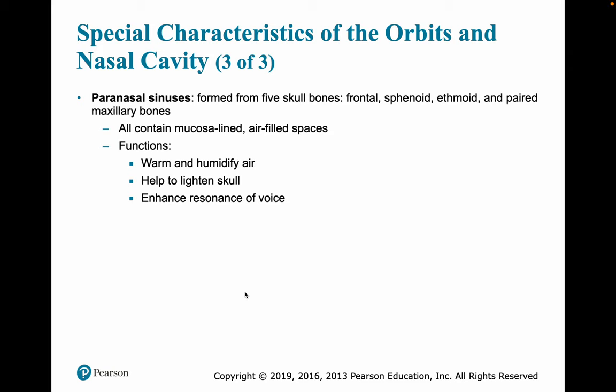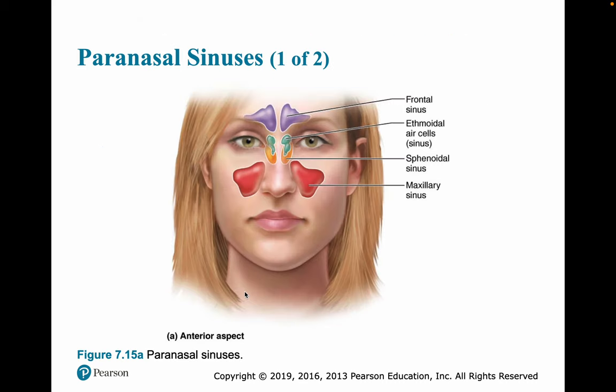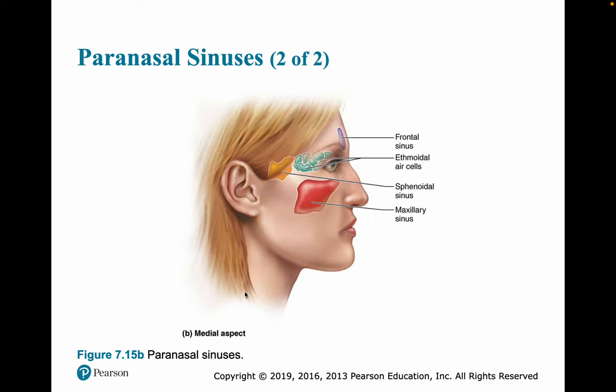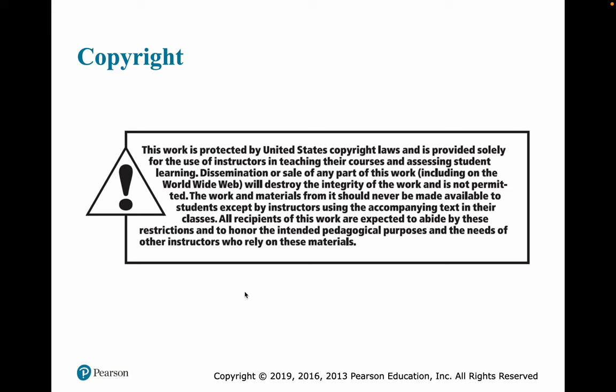Paranasal sinuses are formed from five skull bones: the frontal, the sphenoid, the ethmoid, and the paired maxillary bones. They are mucus-lined, air-filled spaces that function to warm and humidify air, make the skull lighter than if it were solid bone, and enhance the resonance of our voice. They are shown from the front and from the side. And that brings us to the end of the skull section.